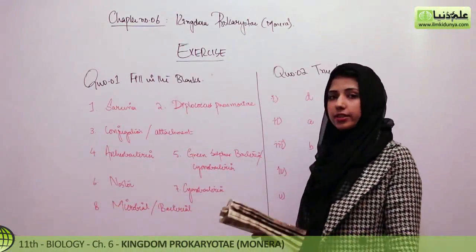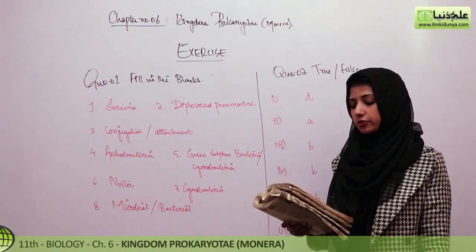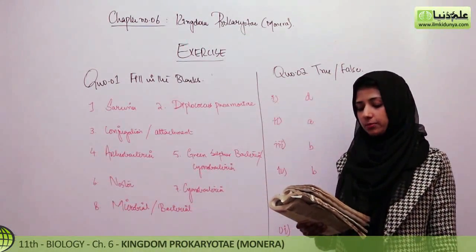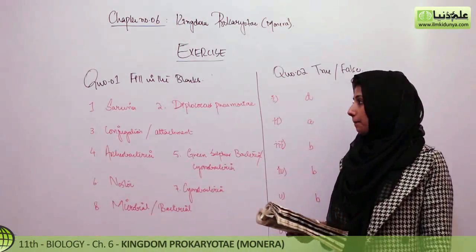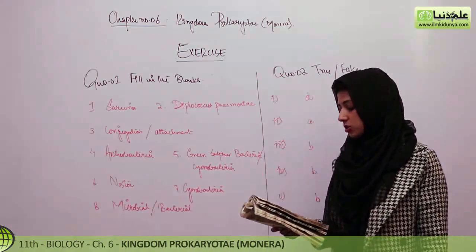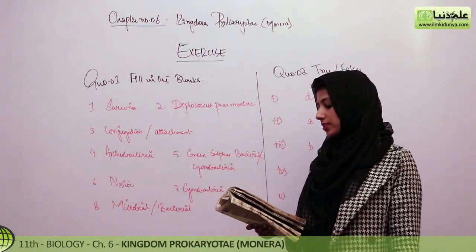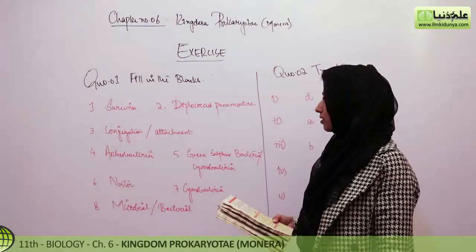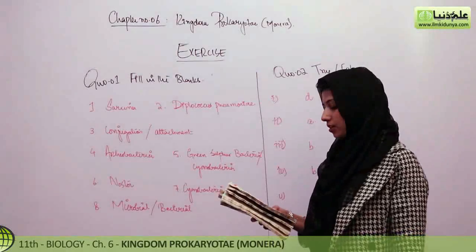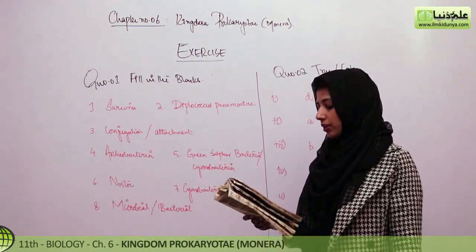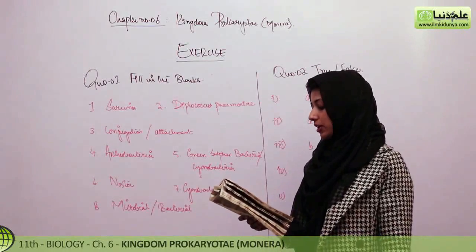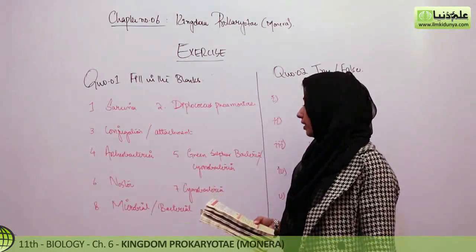We are dealing with the exercise. In this exercise, we have to fill in the blanks. Bacterial arrangement in packets of 8 cells is called sarcina. The shape and arrangement of dash is diplococcus.